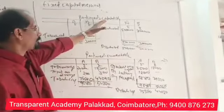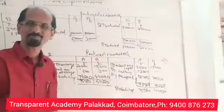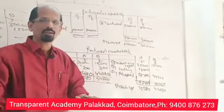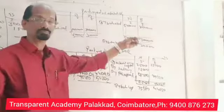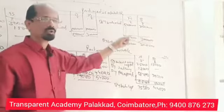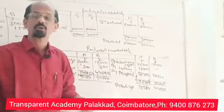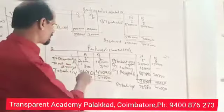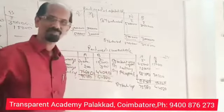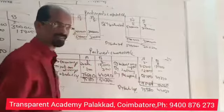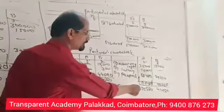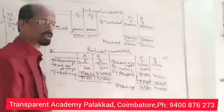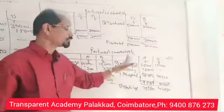Under the fixed capital method, both the Partners Capital Account and Partners Current Account are prepared. The Partners Capital Account has the usual columnar format — Particulars: A and B on both sides. The opening capital is entered as 'By Balance b/d' — 5,00,000 and 3,00,000. Interest on capital and salary are not entered in the capital account — they go into the current account. The capital amount remains fixed. The current account will show Interest on Capital, Salary, Drawings, and Interest on Drawings. The current account balance comes to 75,580 and 44,020.